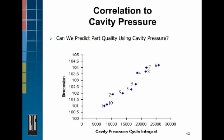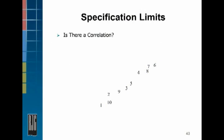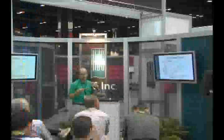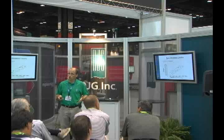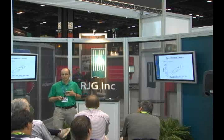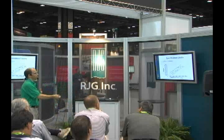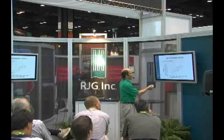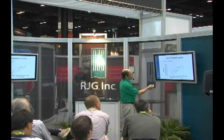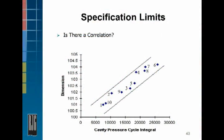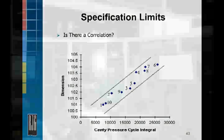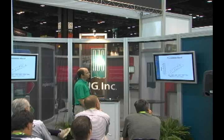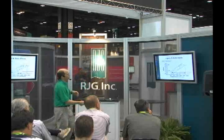We're able to put a correlation band around this data. What this correlation band allows us to do is tell us: can we predict part quality with our cavity pressure data? And when we've got a good correlation like this, it says we can. If our cycle integral is, say, 10,000, then our part dimension is going to fall somewhere between 101 and 102 millimeters. It allows us to tell with a degree of certainty what the part dimension is.